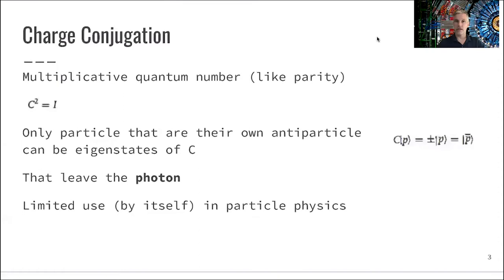So charge conjugation is a multiplicative quantum number like parity. You get identity if you apply charge conjugation twice. You make an antiparticle, and then you apply this to the antiparticle, you get the particle back.